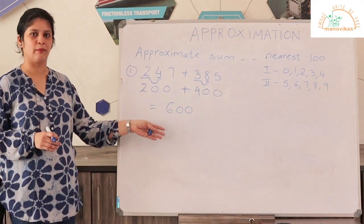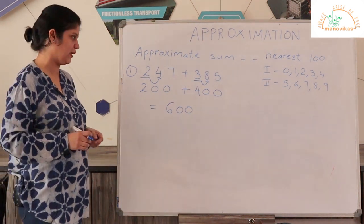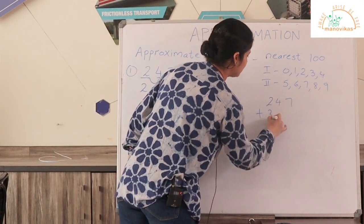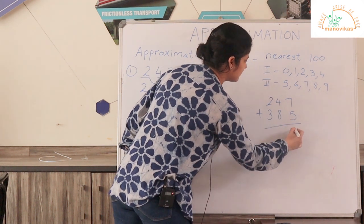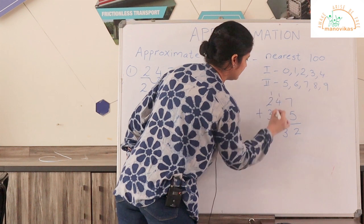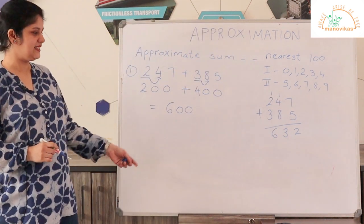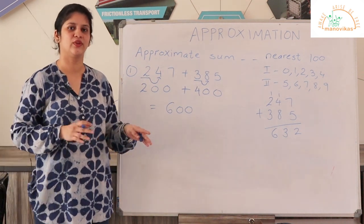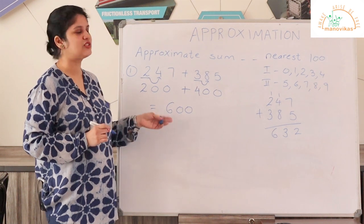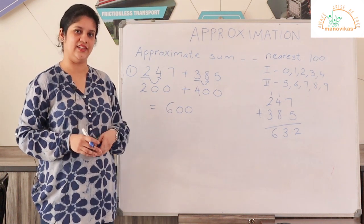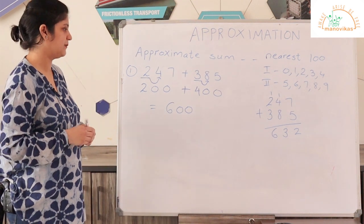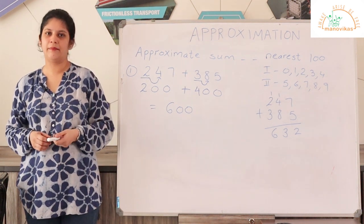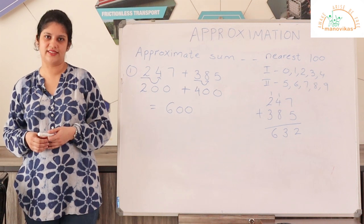Let us see how this approximate value differs from the exact value. If I had to add the exact numbers — 247 plus 385 — the answer would be 632. So you can see that the exact value and the approximate value are not very different; they are more or less close to each other. The advantage is that approximation is easier to deal with, the numbers are easier to remember and understand. This is how we get an approximate sum. Similarly, you may be asked to get an approximate sum by rounding to the nearest ten or nearest thousand.